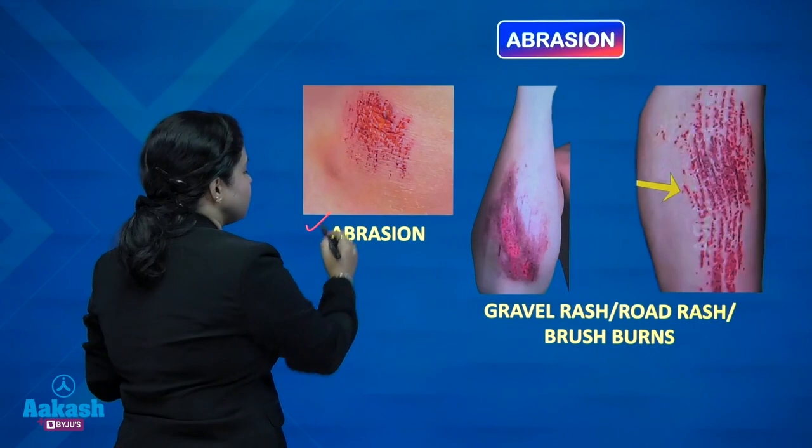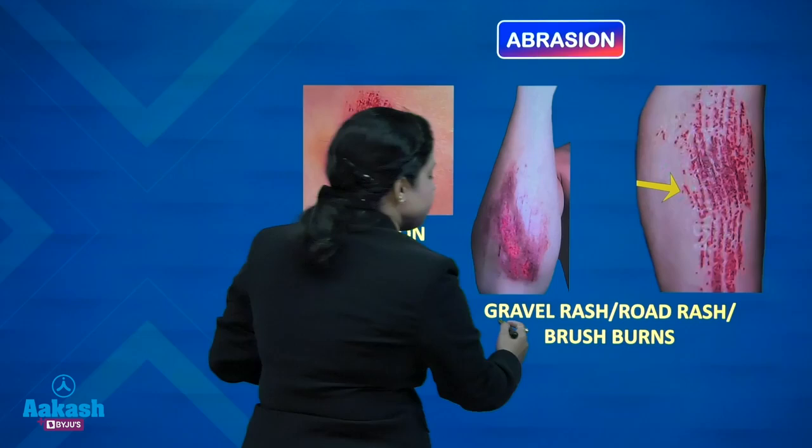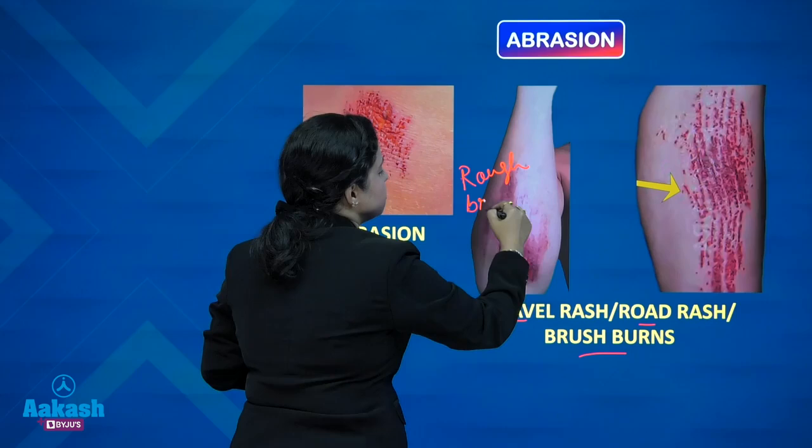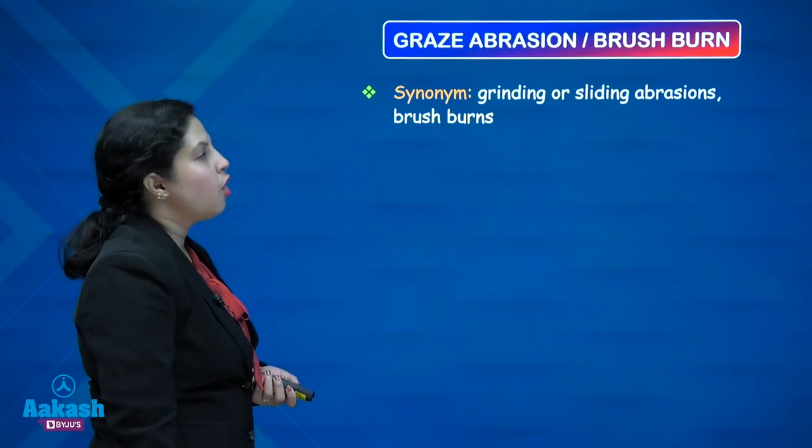These photographs depict an abrasion correctly. As discussed, it is a two-dimensional injury with only length and breadth and no depth. Gravel rash, road rash, or brush burns — as discussed, there is heaping of tissue at one end because of coming in contact with a rough and broad surface.